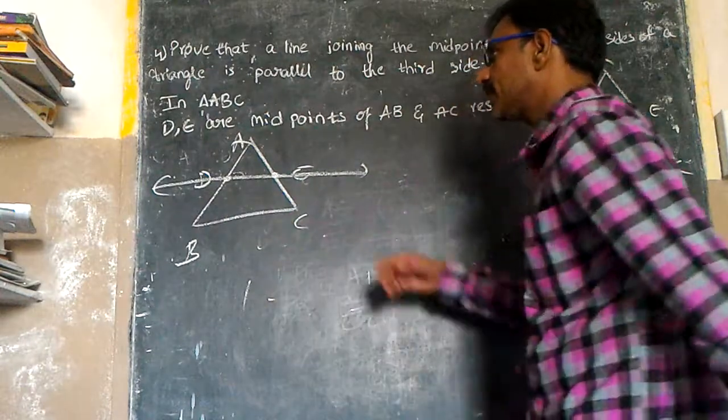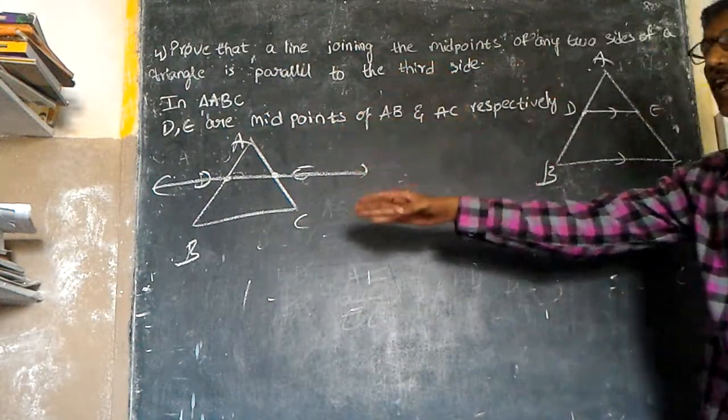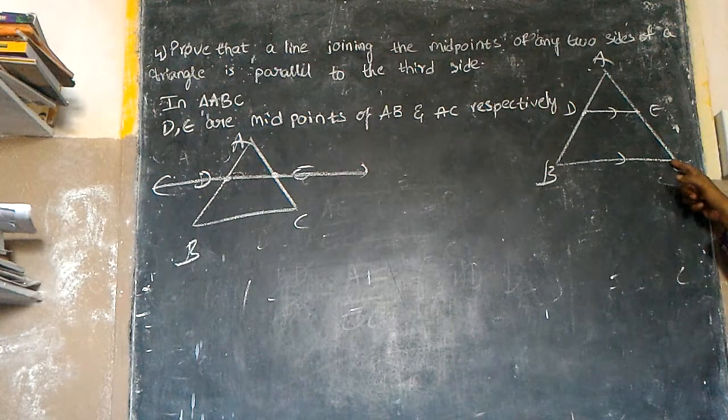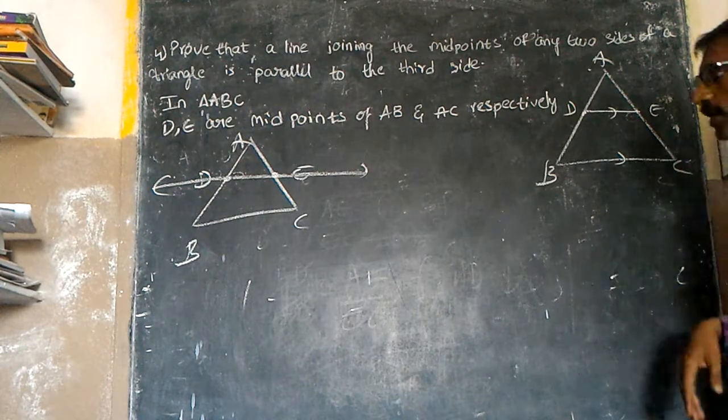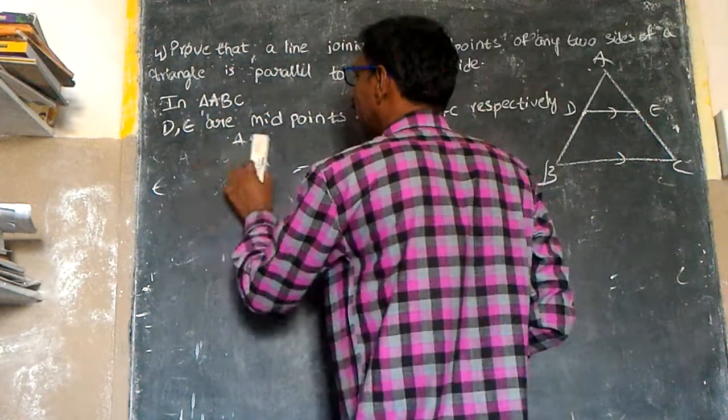In triangle ABC, D and E are the midpoints on AB and AC respectively.